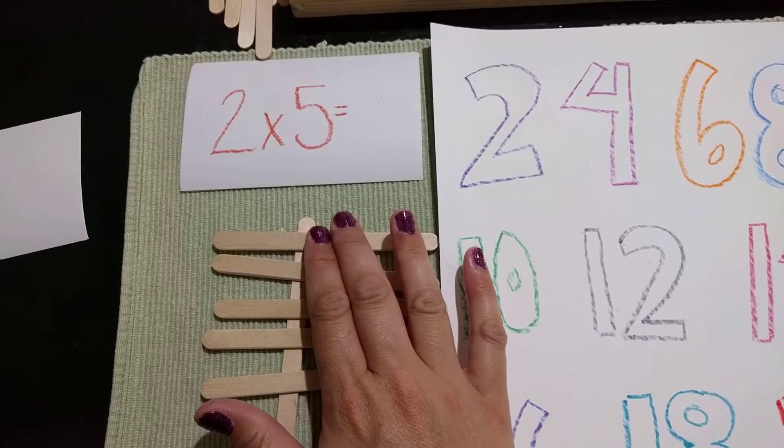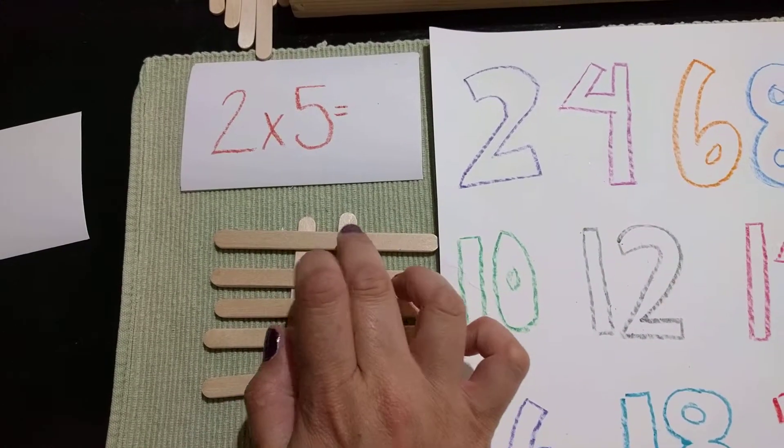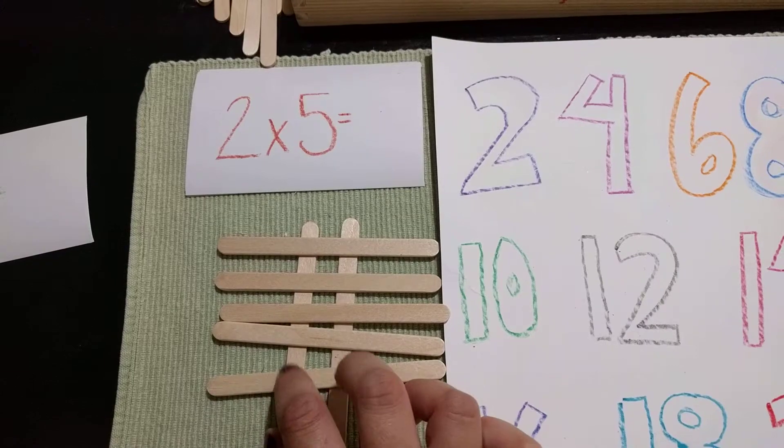2 times 5 is 1, 2, 3, 4, 5, 6, 7, 8, 9, 10.